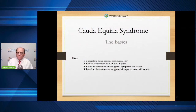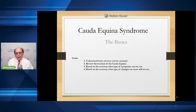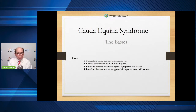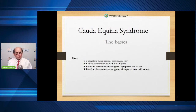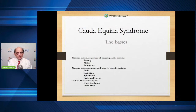The goals of my talk are: to understand the basic nervous system anatomy, to understand where the cauda equina is and how it relates to the symptoms we see, and to review — based on the anatomy — what type of symptoms can we see and what type of changes will others see when they evaluate you on neurological exam.